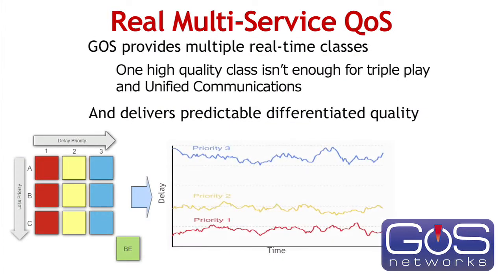If we look here again at our matrix of classes, each vertical column corresponds to a particular priority with respect to delay. Priority one traffic receives the lowest delay and does so consistently. Priority two traffic gets a somewhat higher delay, but again it's consistent. Priority three traffic can experience somewhat more delay again, but again that's consistent. A distributed application needs consistent performance from the network — given that, the application can be tuned to use it and will work well.